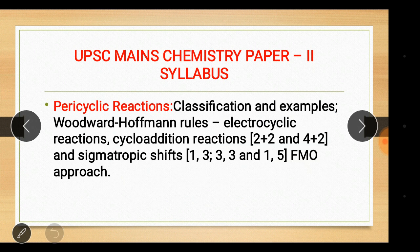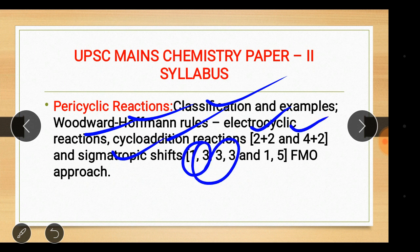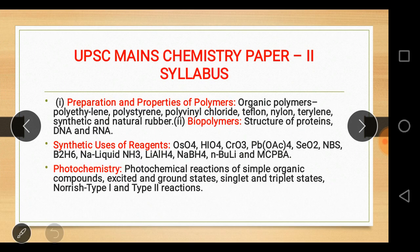Pericyclic reactions: classification and examples, Woodward-Hoffmann rules, electrocyclic reactions, cycloaddition reactions — focusing on [2+2] and [4+2] — and sigmatropic rearrangements [1,3], [3,3] and [1,5]. FMO approach.